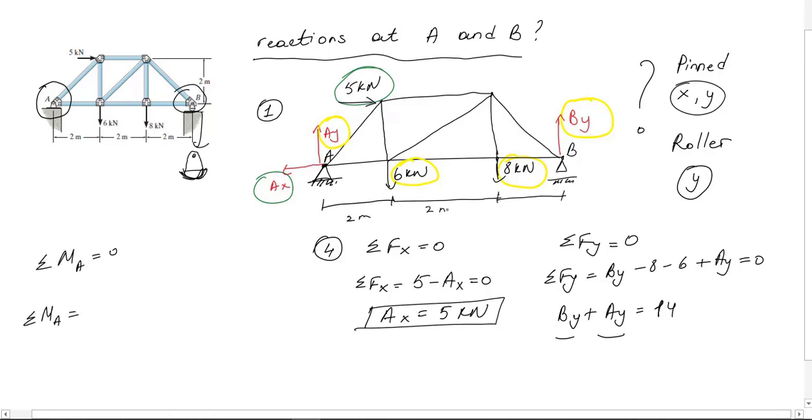I decide to write at point A. For point A, By causes rotation in counterclockwise direction so it is positive, but all other three forces try to rotate in clockwise direction so they are negative. Force at point A does not cause rotation. They pass through point itself, meaning they don't rotate point A.